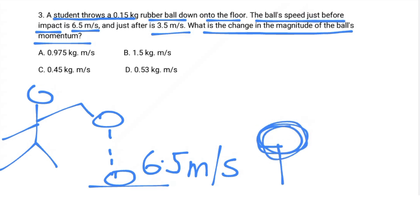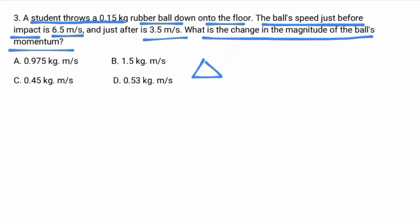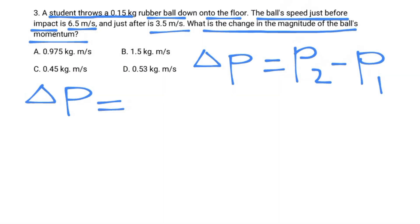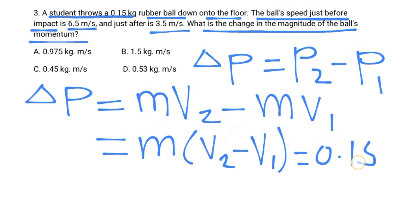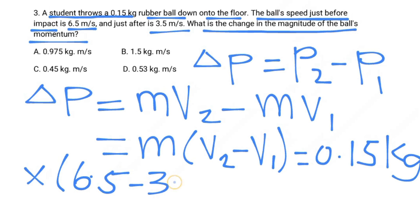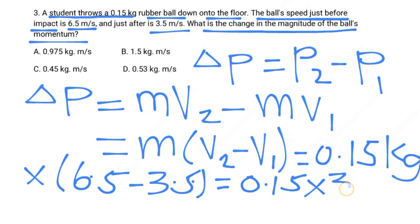The ball's speed before impact is 6.5 meters per second and after impact is 3.5 meters per second. The change in momentum is momentum two minus momentum one. Since we are asked for the magnitude, we compute: mass times |V2 − V1| = 0.15 × |6.5 − 3.5|.